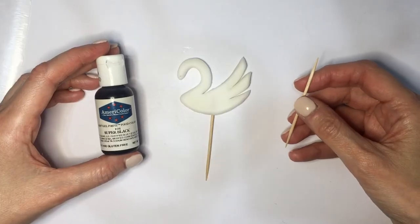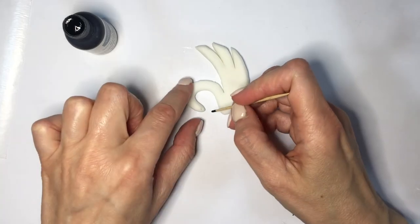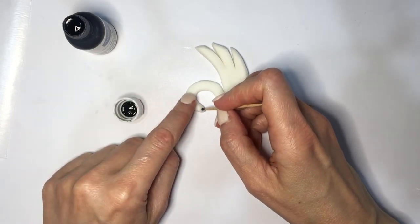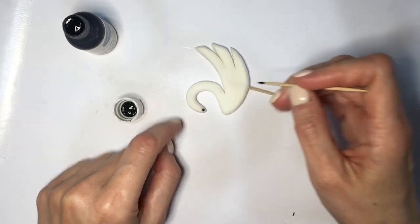So I let my swans dry overnight. Then I'm going to be taking another toothpick and placing a black dot with my black gel food coloring.